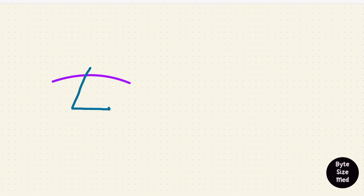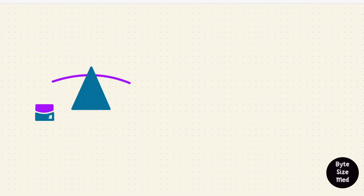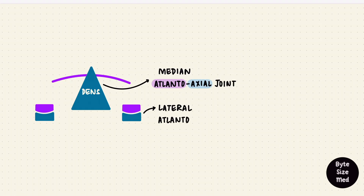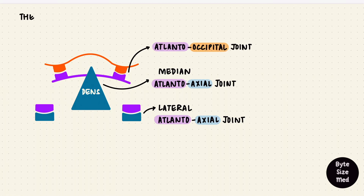Now we're going to get a little creative — this is something I do when making anatomy notes, because drawing in anatomy is challenging. We don't need to draw complicated things; that's what anatomy atlases are for. Assume this is the dens, sitting behind the anterior arch of atlas. The articular processes of atlas and axis form joints on the sides. That makes this the median atlanto-axial joint and these two the lateral atlanto-axial joints. Adding in the atlanto-occipital joints, all these together form the craniovertebral joints.